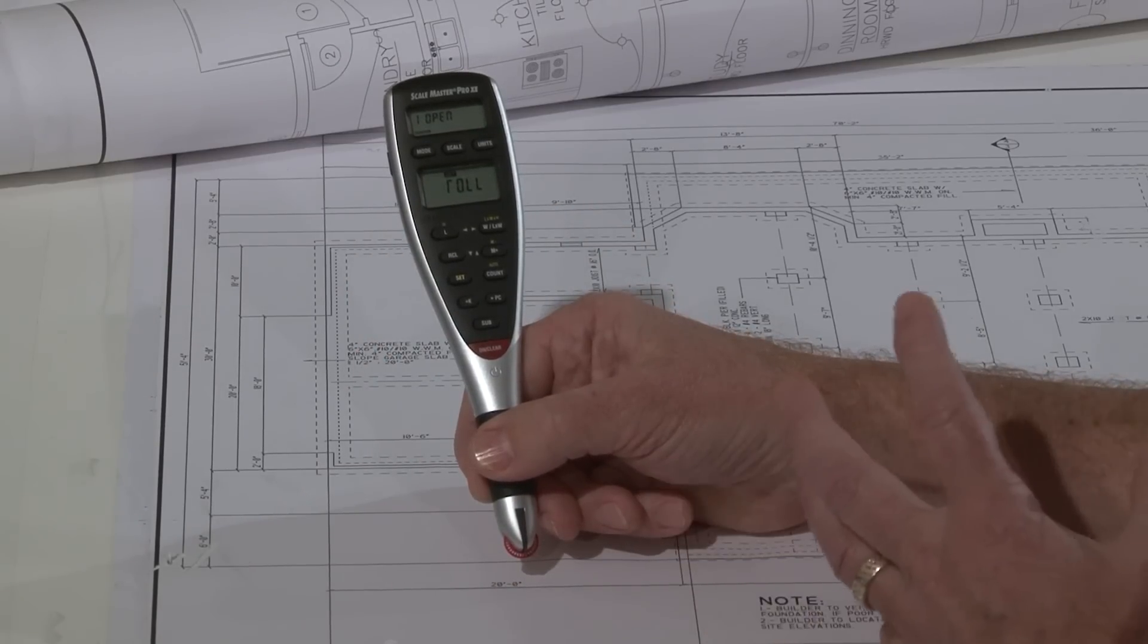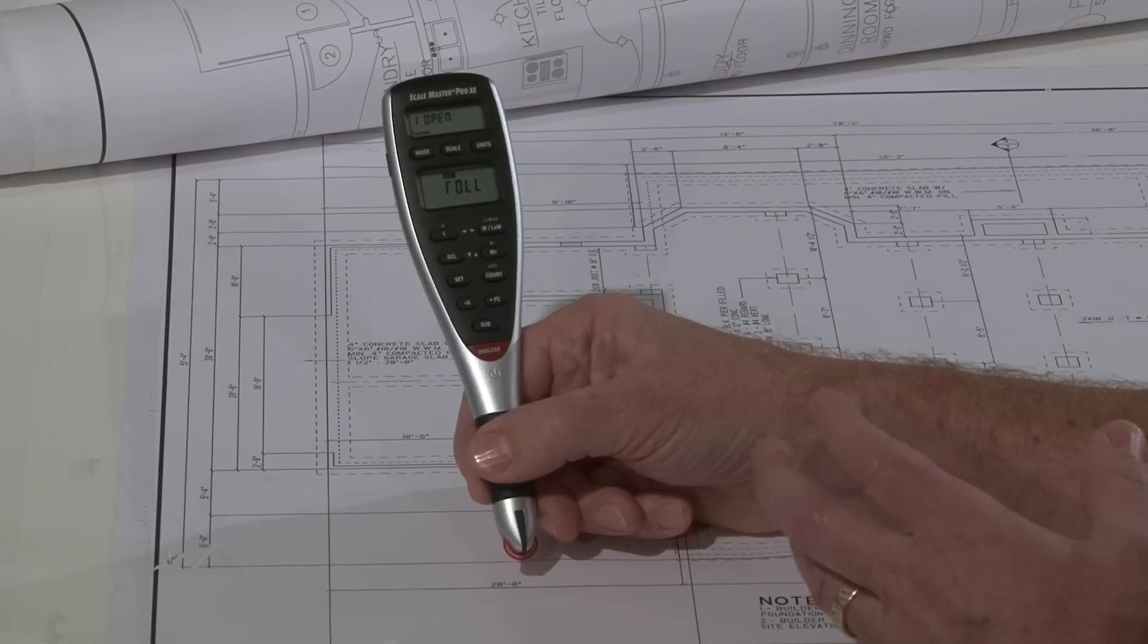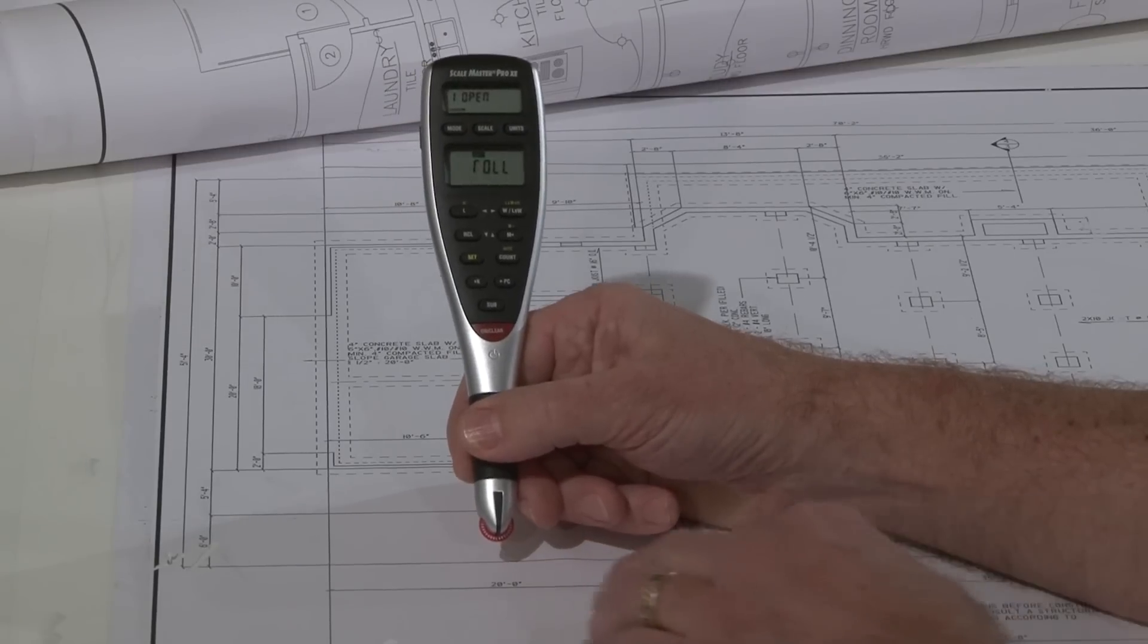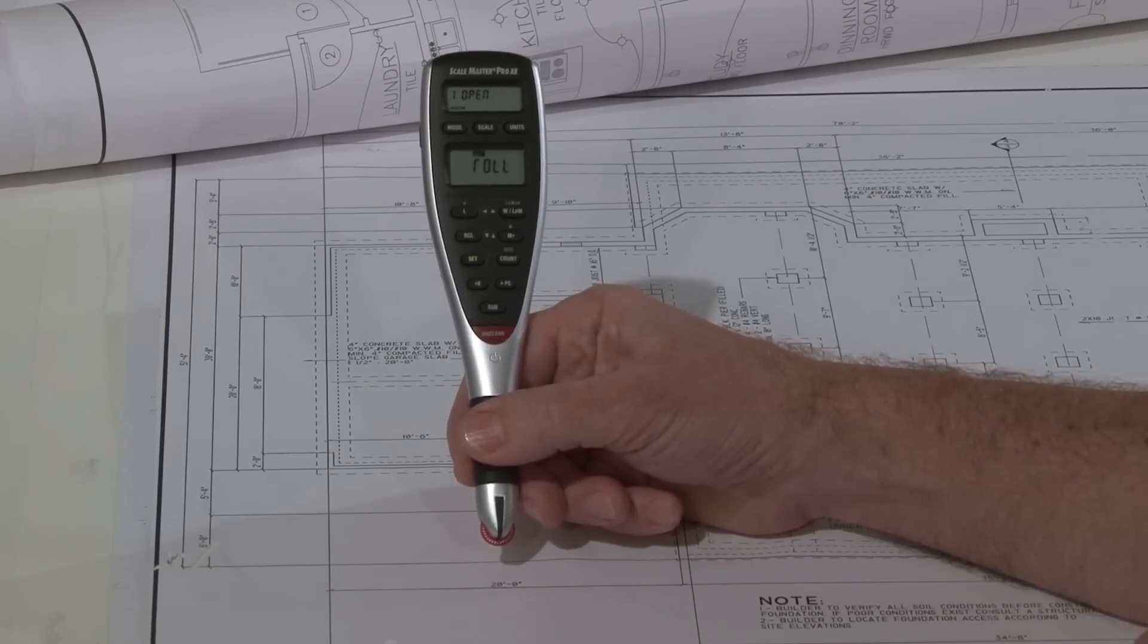Ordinarily you would look at a plan and find any known or stated dimension, whether it's a 16-foot garage door opening, a 5-foot tub, or any dimension line. In this case, we've got a 20-foot dimension line here, and we're going to use that.